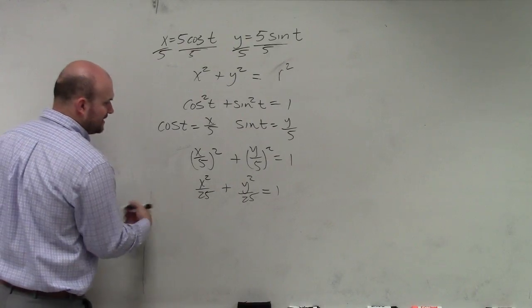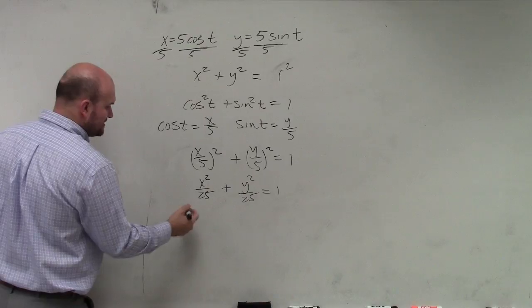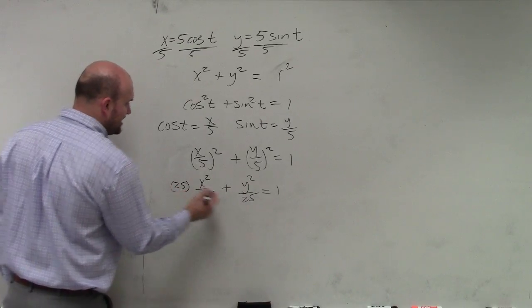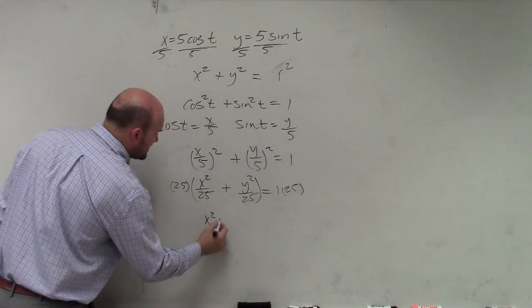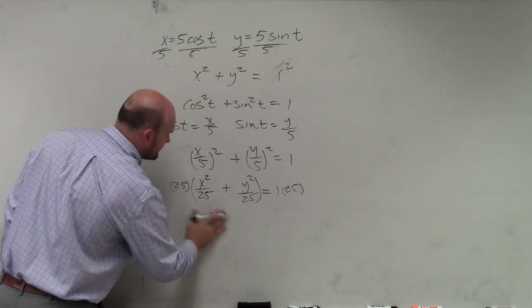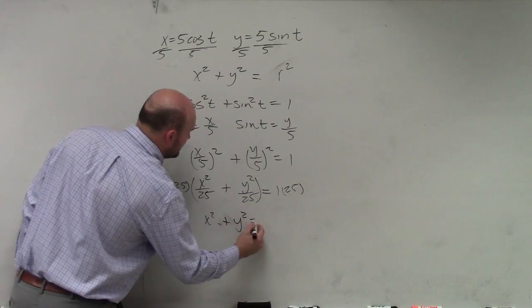Then I can get the 25 off the denominator by multiplying by 25 on both sides. And I get x squared plus y squared equals 25.